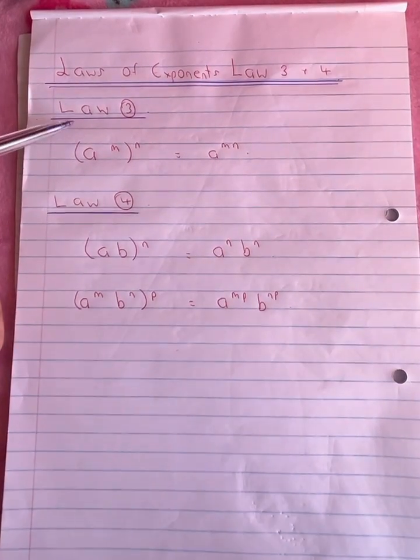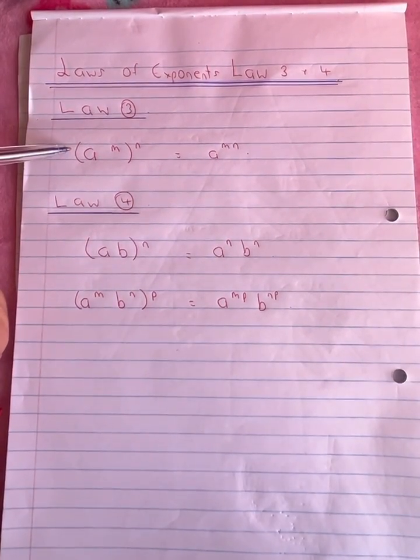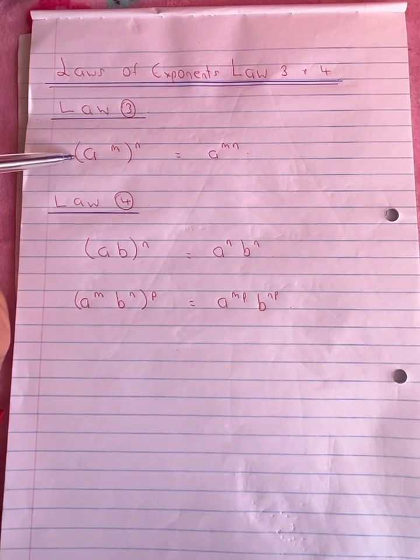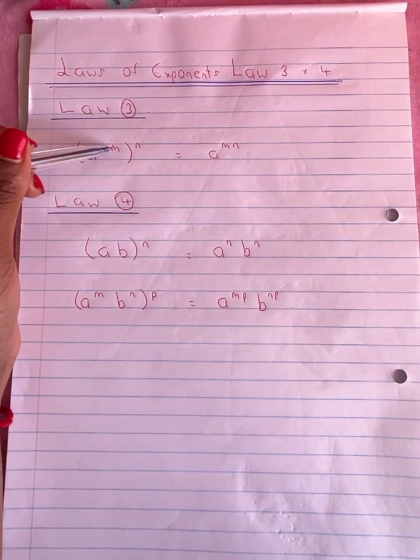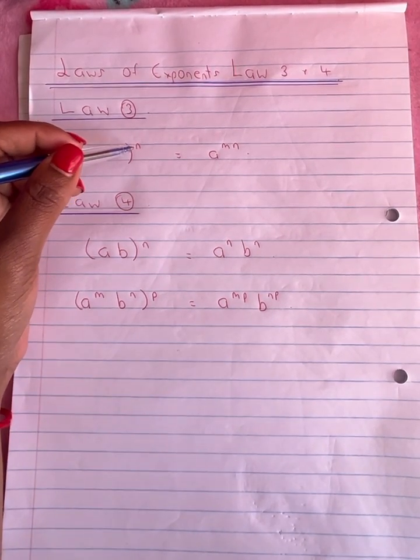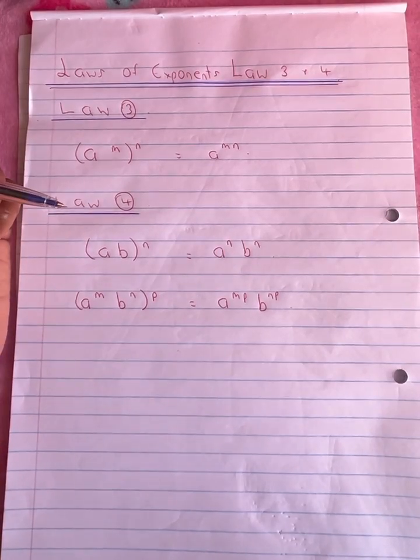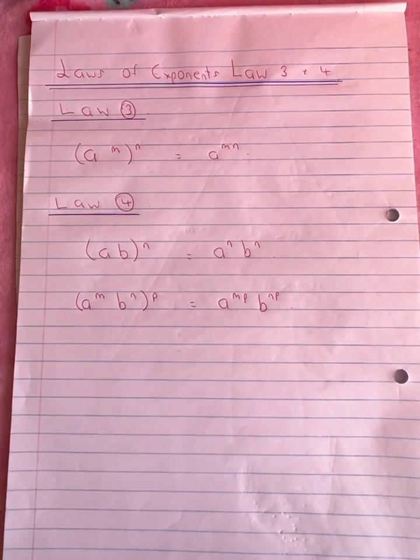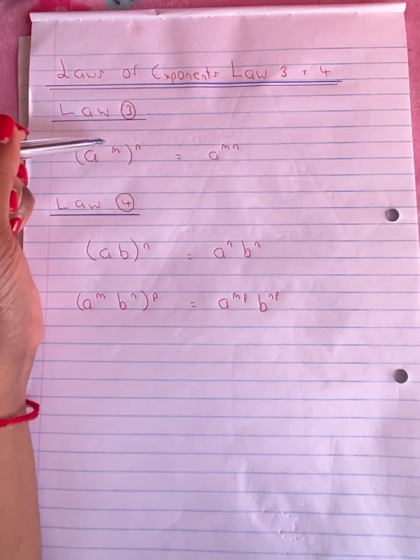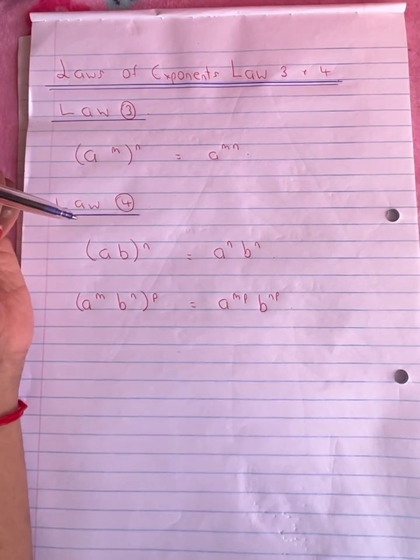Let's have a look at law 3. Law 3 basically states that we have a base raised to a power and outside the brackets it's raised to another power. The answer should be a to the power of m times n.